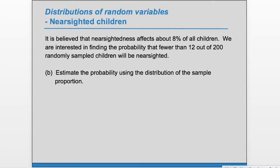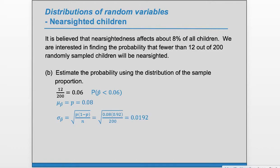Part B: estimate the probability using the distribution of the sample proportion. We are interested in the probability that fewer than 12 out of 200 have this property. 12 out of 200 is 0.06, so rather than finding P(X < 12), we find the probability that p-hat is less than 0.06. We can use the formulas for mu and sigma of p-hat: mu = 0.08, and sigma = sqrt(p·(1−p)/n), which gives us 0.0192.